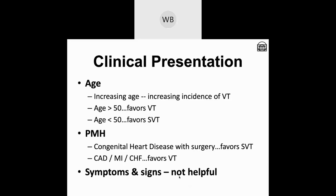VT tends to occur in the setting of chronically or acutely ill left ventricles. Multivessel coronary disease, past myocardial infarction, and significant chronic heart failure are all different forms of chronic left ventricular disease. Age and past medical history are not conclusive by themselves but are useful pieces of the puzzle. For example, a 65-year-old male with a past history of MI, several stents, and chronic heart failure has a chronically ill left ventricle—he could have VT, but he could also have SVT with aberrant conduction, so we're going to have to look at the ECG.